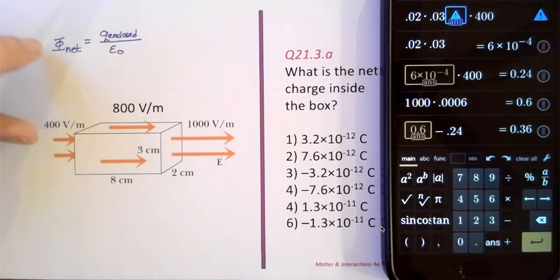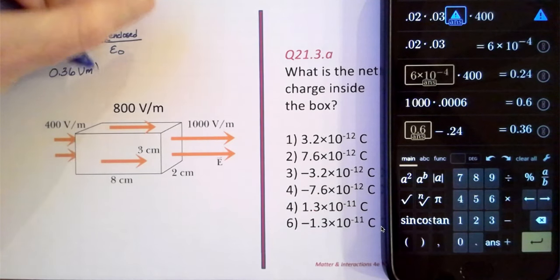We know what the flux is from before. It's 0.36, so we have 0.36 volt meters as our net flux for the box.